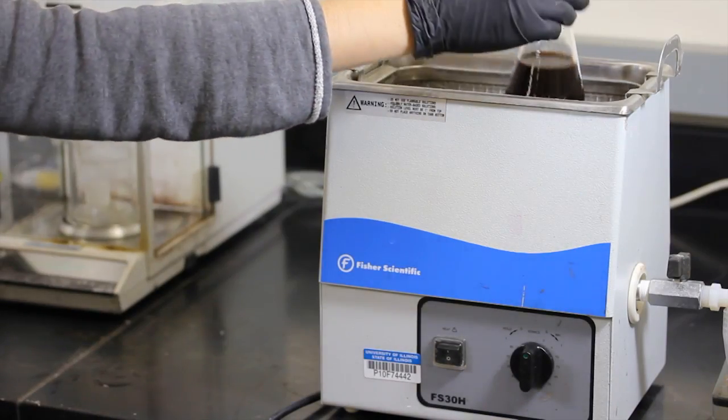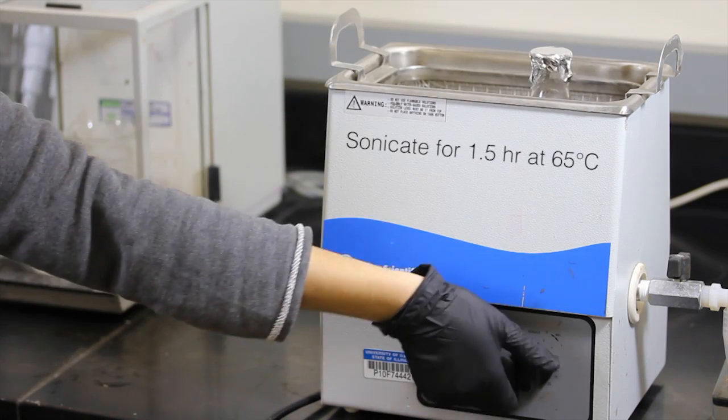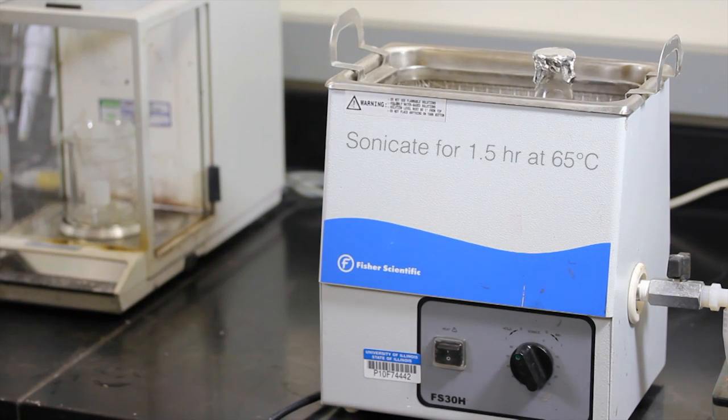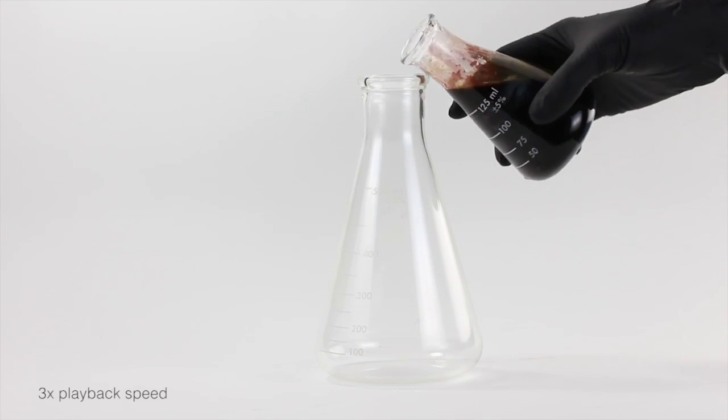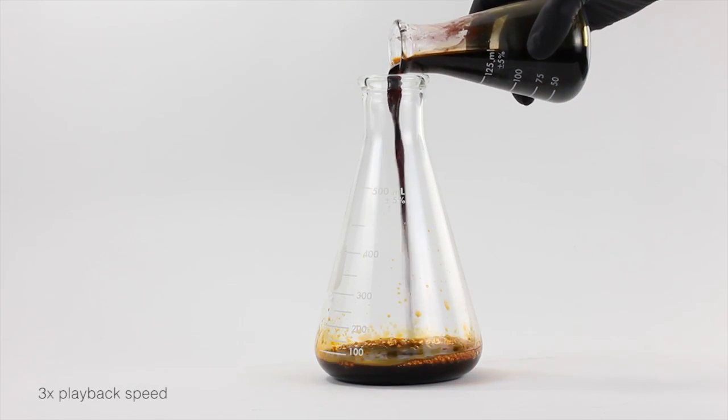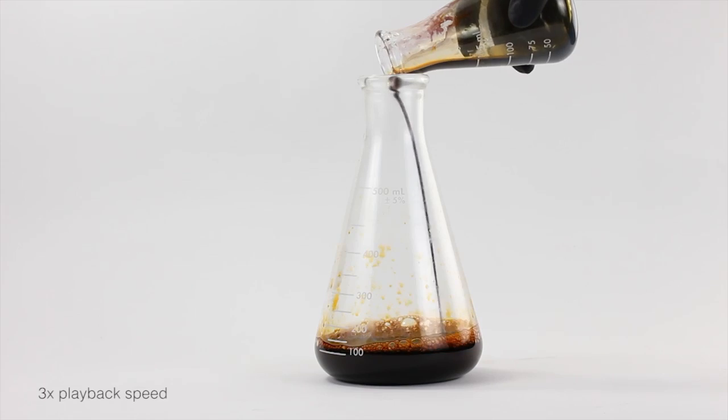We place the flask in a heated sonic bath, and the particles ripen to an average diameter of 400 nanometers. After cooling, we transfer the solution to a larger flask, and scrape out the thick precipitate.